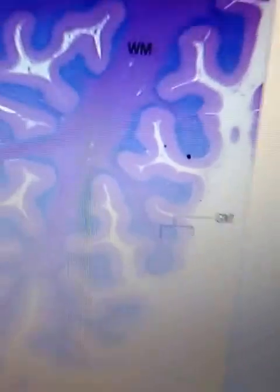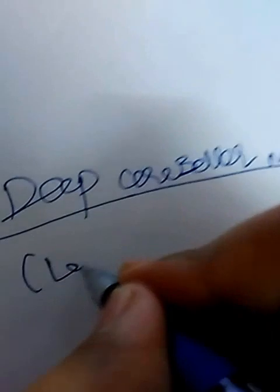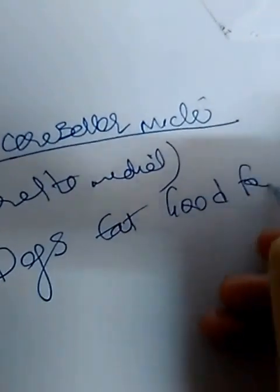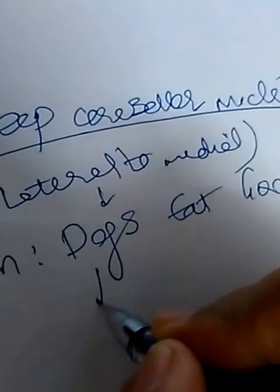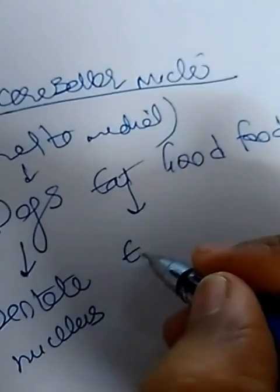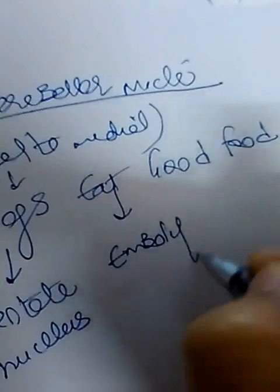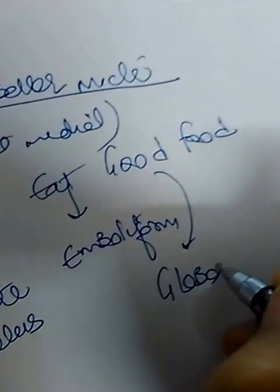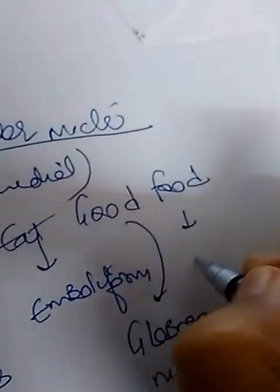Now coming to the deep cerebellar nuclei within the white matter — there are four deep cerebellar nuclei. From lateral to medial, you can remember them with the mnemonic 'Dogs Eat Good Food': the lateral-most is the Dentate nucleus, then E for Emboliform nucleus, then G for Globose nuclei, and F for Fastigial nucleus.